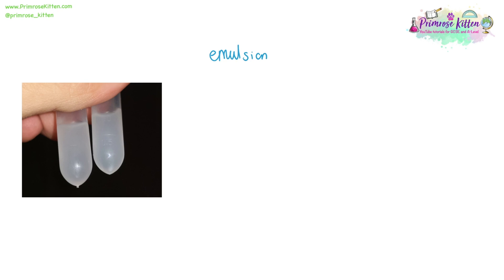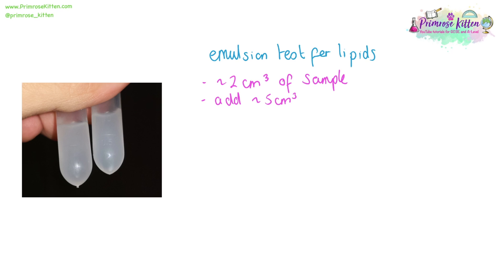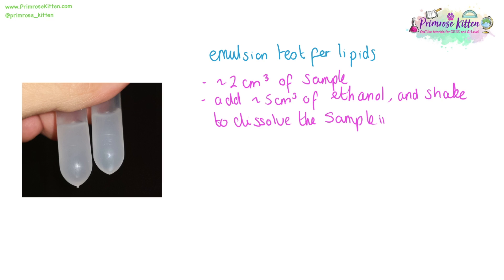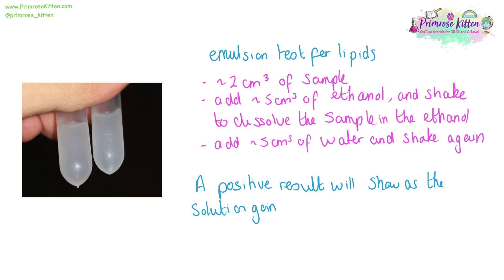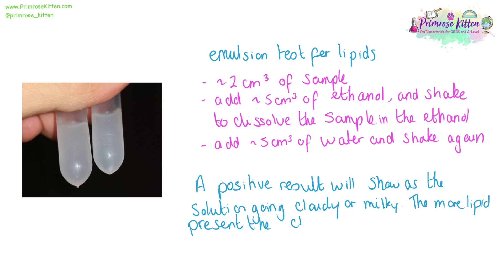You need to know how to test a sample for lipids, and this is the emulsion test for lipids. To a clean, dry test tube, add roughly two centimetres cubed of your sample. Follow that up by adding roughly five centimetres cubed of ethanol. Shake it to dissolve the sample in the ethanol. Add a further five centimetres cubed of water and shake it again. A positive result will show as the solution going cloudy. The more lipid present in the sample, the cloudier it will go.